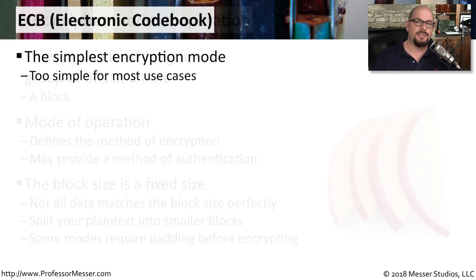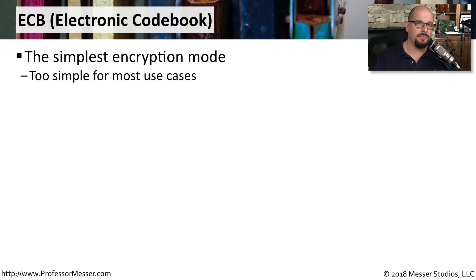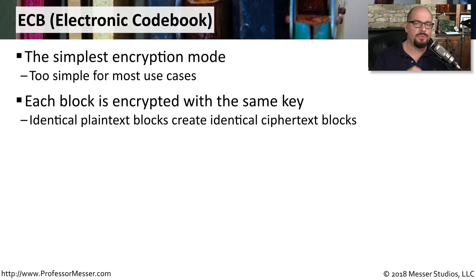One of the simplest modes of operation is called ECB, or Electronic Codebook. This mode of operation is so simple that it's not commonly used for most use cases that require encryption. Each block that we're going to encrypt is encrypted with exactly the same key.